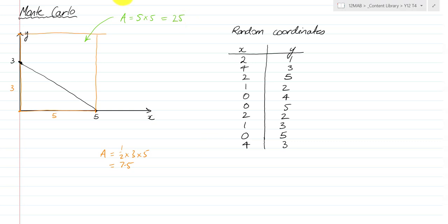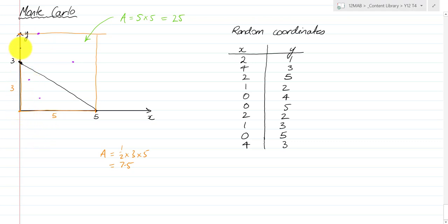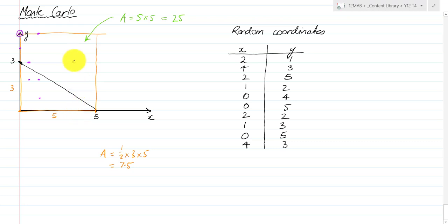Let me start with these coordinates and quickly plot them in purple. So 2,1 is about here; 4,3 is up here; 2,5 is up here; 1,2 is about there; 0,4 is about here; 0,5 is up here; 2,2 is about there; 1,3 is about there; 0,5 appears again — I'll circle that to show there are two points there; and 4,3 is also repeated — I'll circle that too.